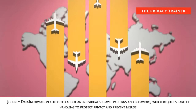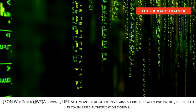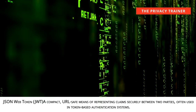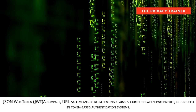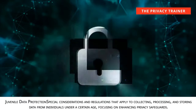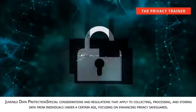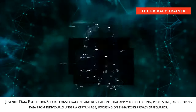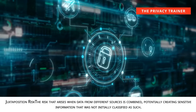Journey data. Information collected about an individual's travel patterns and behaviors, which requires careful handling to protect privacy and prevent misuse. JSON web token, JWT. A compact, URL-safe means of representing claims securely between two parties, often used in token-based authentication systems. Juvenile data protection. Special considerations and regulations that apply to collecting, processing, and storing data from individuals under a certain age, focusing on enhancing privacy safeguards. Juxtaposition risk. The risk that arises when data from different sources is combined.